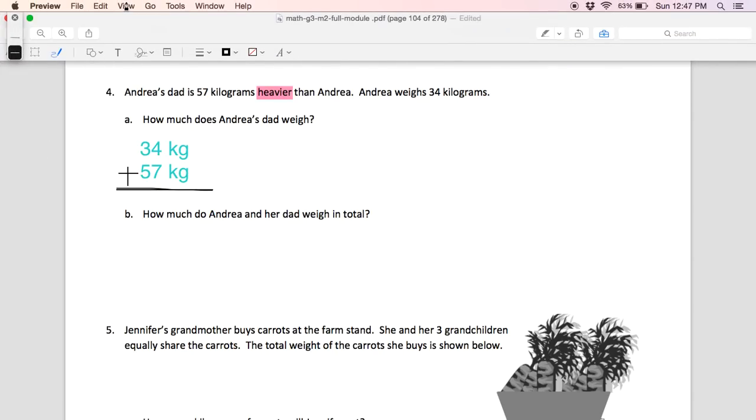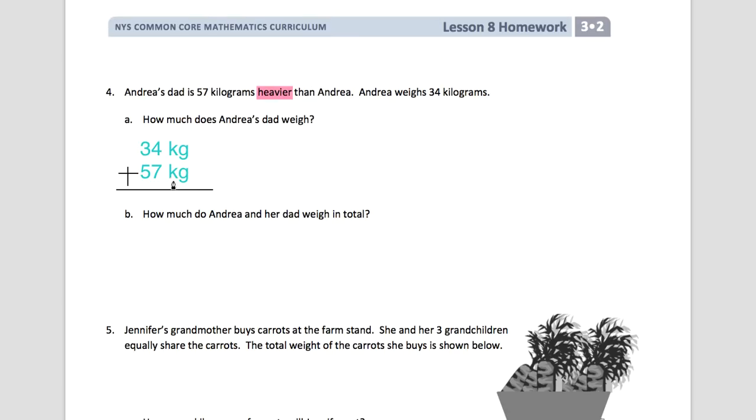All right. So we're going to go back and we are going to add these numbers. So I have four plus seven gives me 11. So I'm going to put a one down below and I'm going to regroup a one for my 11. Then I'm going to add three plus five, which gives me eight. One more will give me nine and I have 91 kilograms.